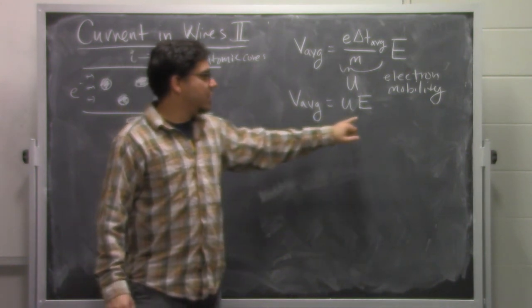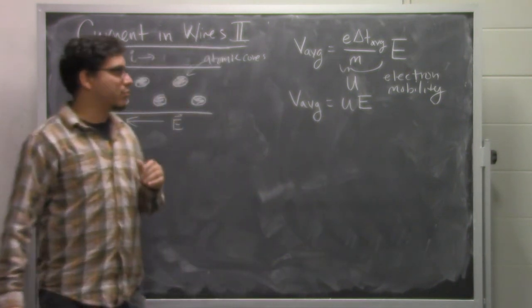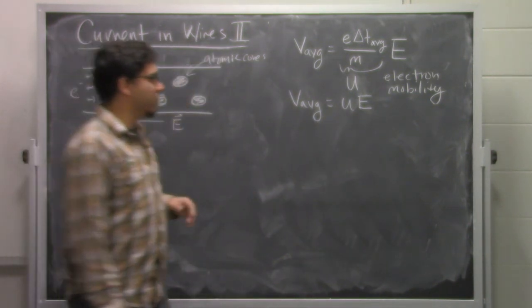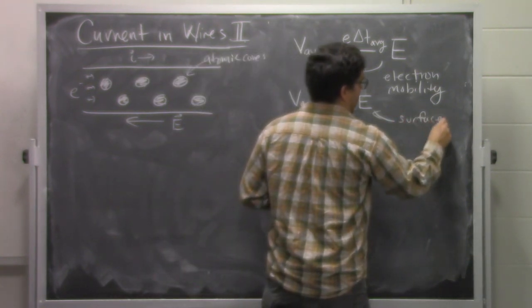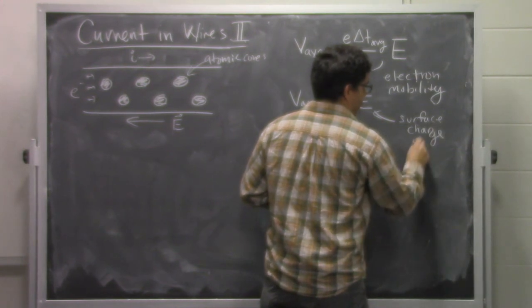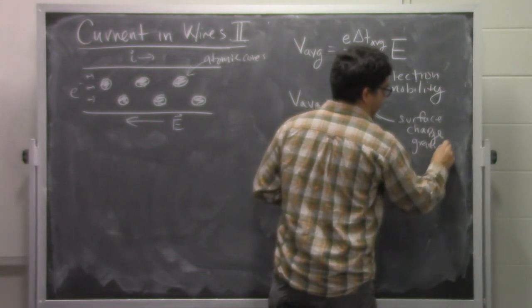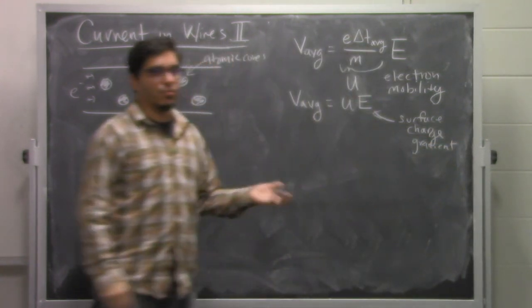But that this average velocity is directly related to the electric field that is the result of the surface charge gradient. So the bigger that surface charge gradient, the bigger the electric field, and therefore the larger the average velocity.